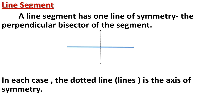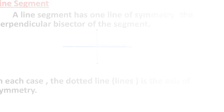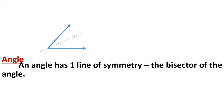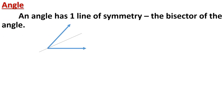The second figure is an angle. An angle also has one line of symmetry, which is the bisector of the angle. As shown in the figure, the black dotted line is the line of symmetry — it bisects the angle, dividing it into two equal halves.